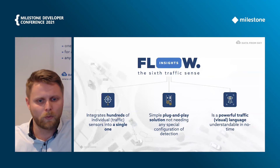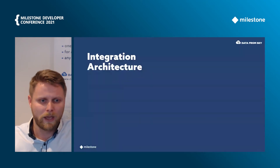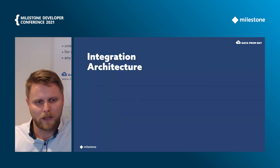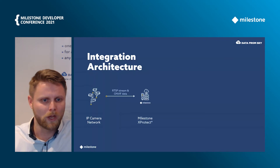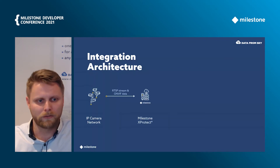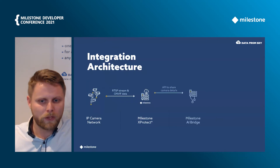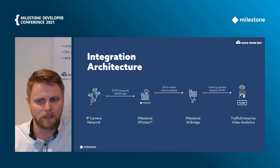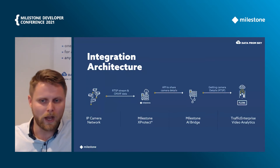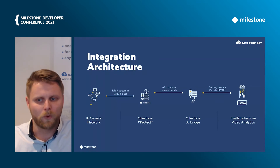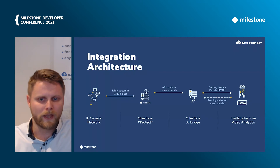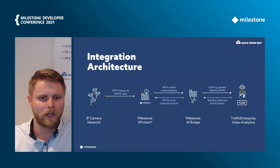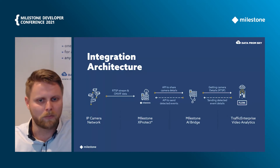Now, how do we integrate with Milestone XProtect? It is a very simple process. First, there is a network of cameras sending data to Milestone via RTSP or other data formats. We then utilize the newly developed Milestone AI Bridge to get camera details into our Flow Engine — mostly we receive the RTSP stream, as that is what we need for analytics. After analysis, we send the events back through the AI Bridge to XProtect to visualize them in a single point.